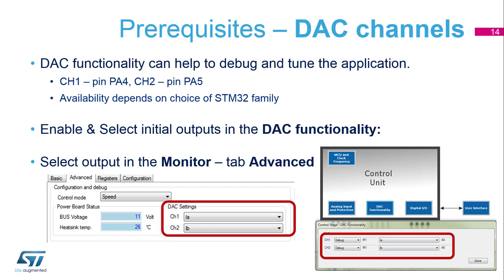The DAC, if available on the STM32, is always connectable on pins PA4 and PA5. You can control it with the DAC functionality block, and in the monitor we can choose which variables are shown at runtime. The second setting is inside the workbench in the control stage, where you can select what will be used after compilation.